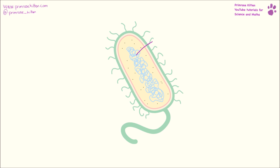Starting in the middle, this blue squiggly stuff is the DNA. This is the bit that's really important for giving instructions — telling the cell what to do. It's all the genes that the cell needs, responsible for replication and responsible for what the cell actually does.